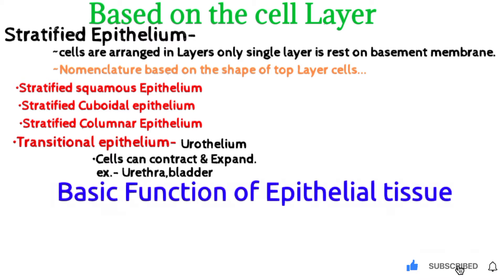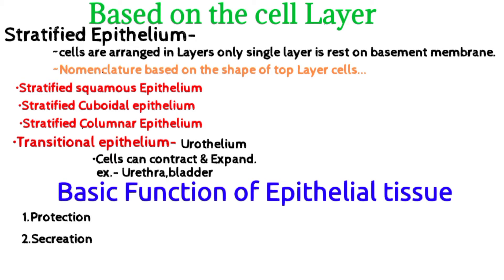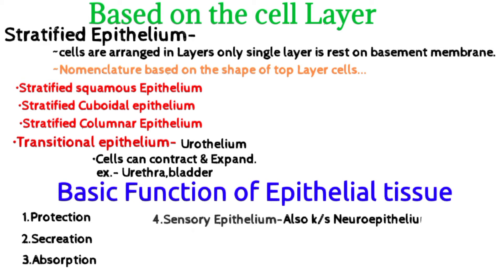Now, coming to the basic functions of epithelial tissue. The first is protection — epithelium protects our skin from sunlight, abrasion, and injury. Second is secretion, such as gastric gland secretion in the stomach. Third is absorption — columnar epithelium in the intestine and PCT in the kidney. Fourth is sensory epithelium, also known as neuroepithelium, present in the nose, tongue, and ear.